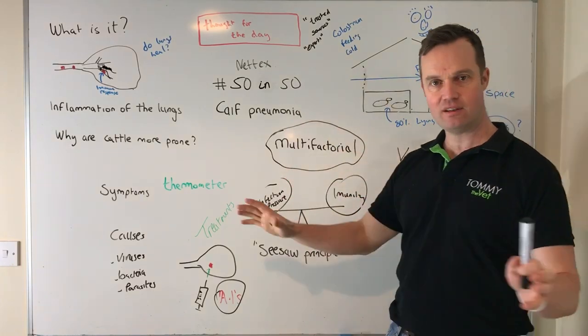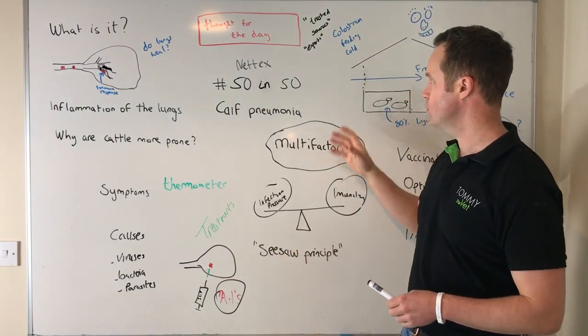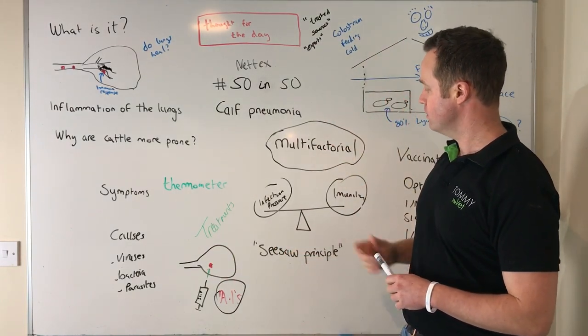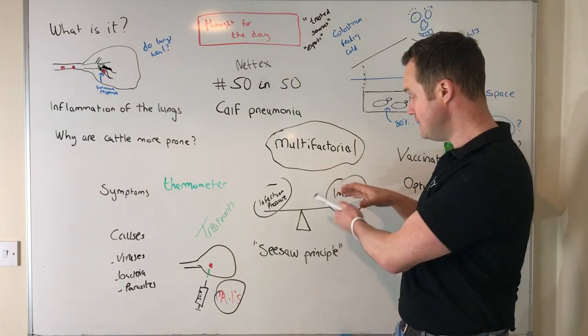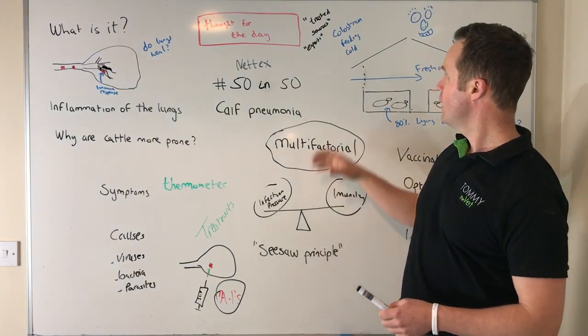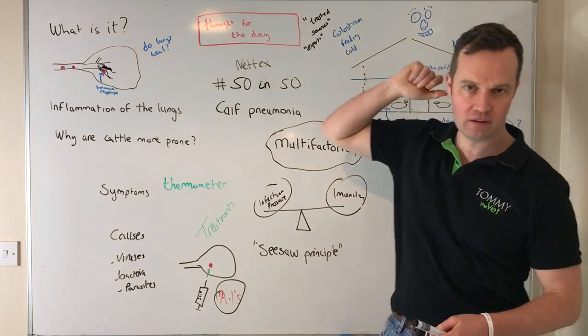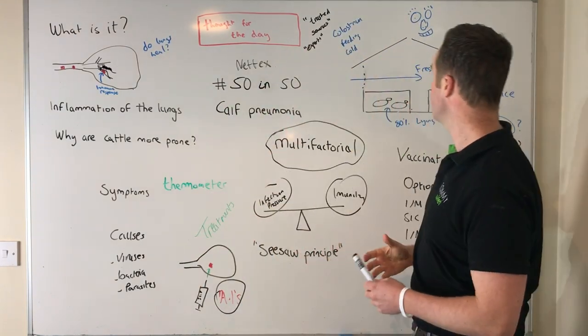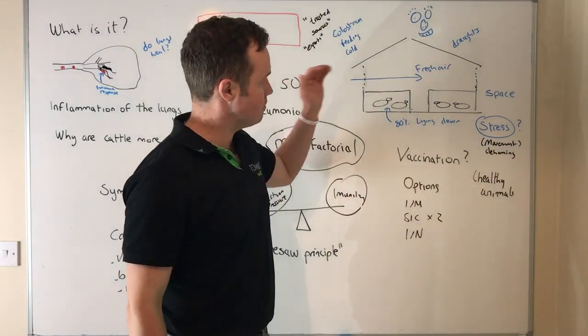If you think about calves' immunity, you cannot talk about colostrum enough. You just cannot talk about it enough because it's key, even with pneumonia. You think about even E. coli scours - as I said in one of my previous vlogs, scours leads to issues as well because it lowers immunity. So infection pressure - if we think about immunity: colostrum, feeding, getting them right, cold weather, heat stress. The environment that the calves are in is really, really critical.